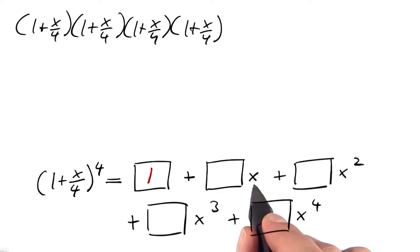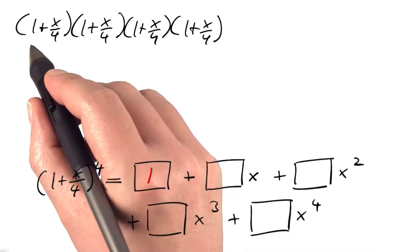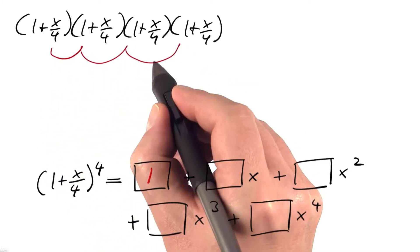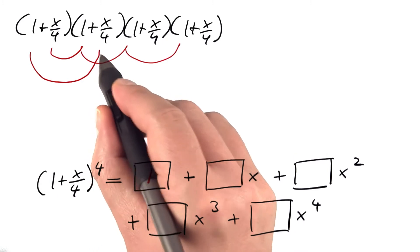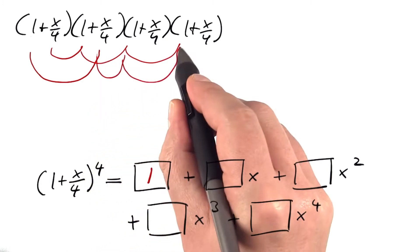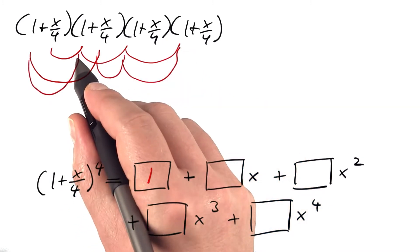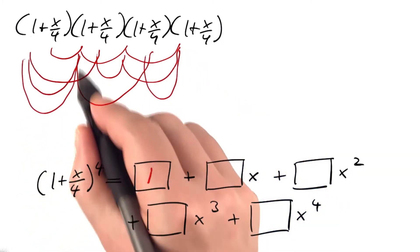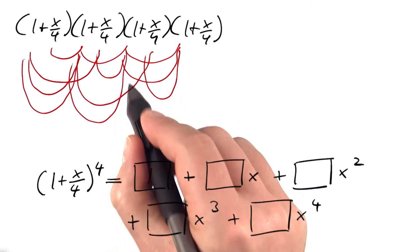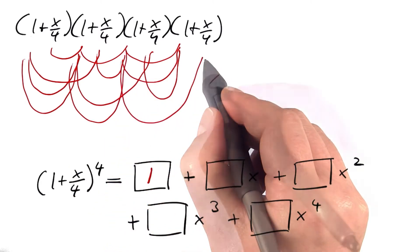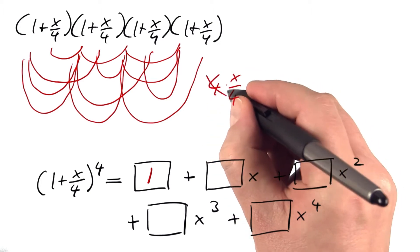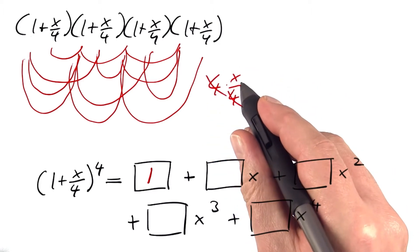For the next box, we need everything that has precisely one x in it. For instance, (x/4)(1)(1)(1), or (1)(x/4)(1)(1), or (1)(1)(x/4)(1), and there's the fourth one: (1)(1)(1)(x/4). We get four of these. It's 4 times x/4, which is 1 times x.